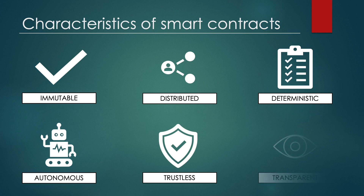Finally, smart contracts are transparent. They are always stored on a public blockchain, so the code can be seen by everyone, whether or not they are participants in the smart contract.